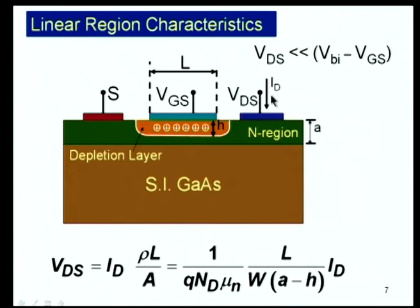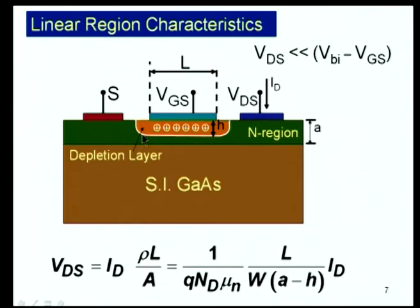Now let me go into the analysis of this device. Just like a MOSFET, the MESFET has a linear region, a triode region, and a saturation region. In the linear region it behaves like a resistor: the channel thickness is the same from source to drain end, analogous to how channel charge is uniform in a MOSFET. We are in this region when drain voltage VDS is much less than the voltage present across the depletion layer, VBI − VGS.